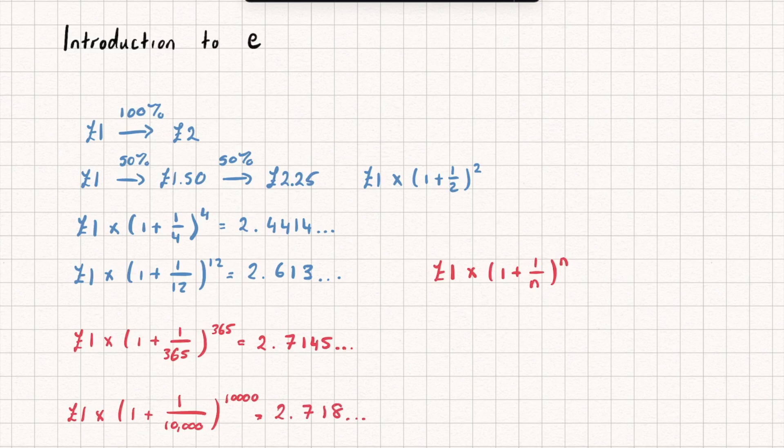So you can see actually the 7 doesn't seem to be changing now. It's kind of just staying 2.71 and some other digits. So maybe actually this is going to converge. So you know go towards a specific value. And in fact it does.